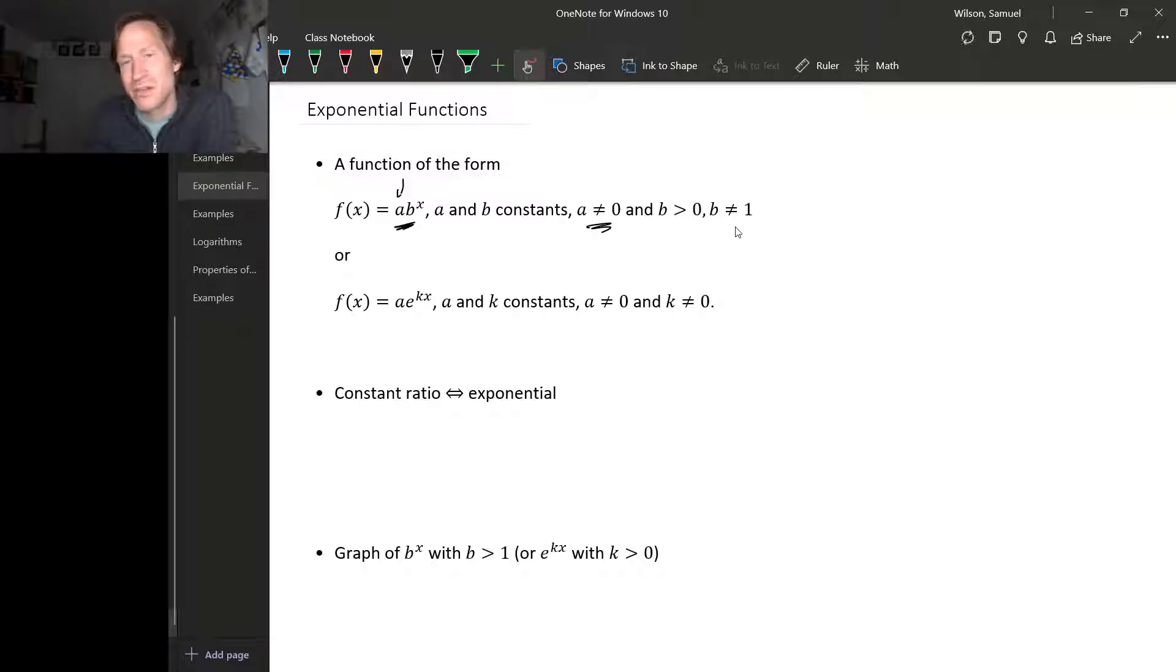Sorry, b has to be bigger than zero and not equal to one. We want b not equal to one because otherwise b to the x is always just one. And we have to have b greater than zero because otherwise we run into domain issues with this exponential. So with these restrictions, an exponential function is just a function of this form: a times b to the x.